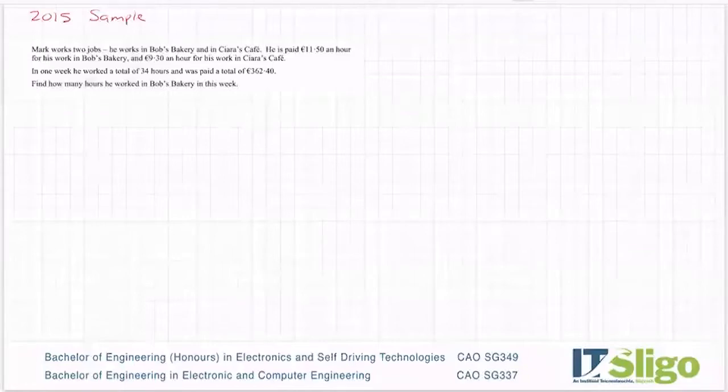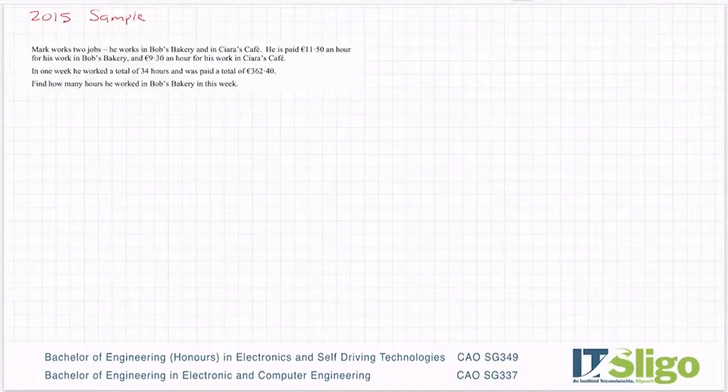Okay, a 2015 question from a sample or mock paper. Mark works two jobs. He works in Bob's Bakery and in Ciara's Cafe. He's paid €11.50 an hour for his work in Bob's Bakery and €9.30 an hour for his work in Ciara's Cafe.